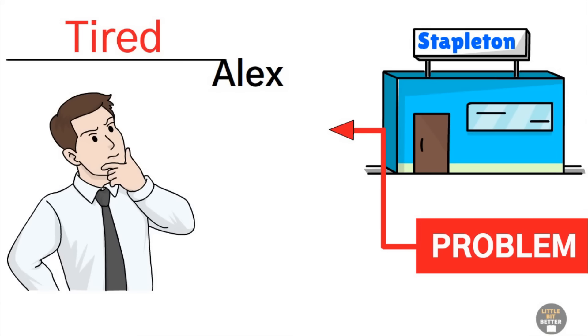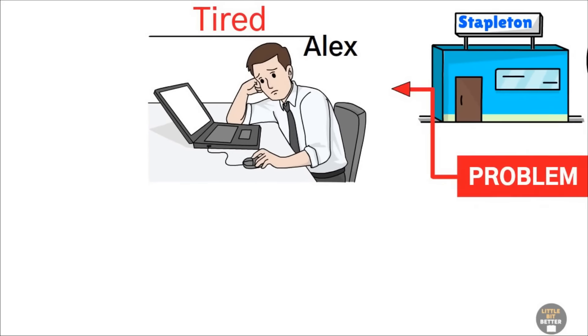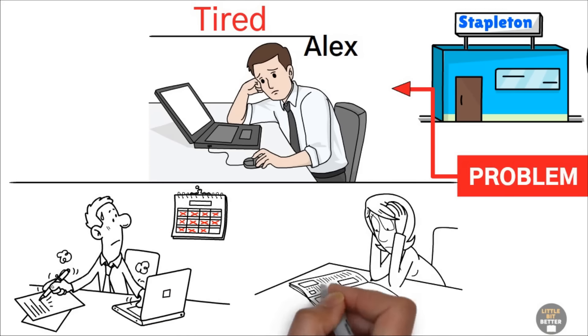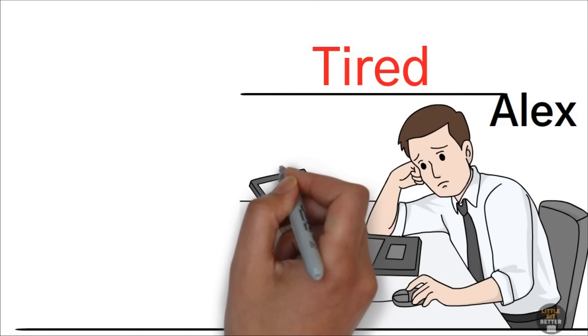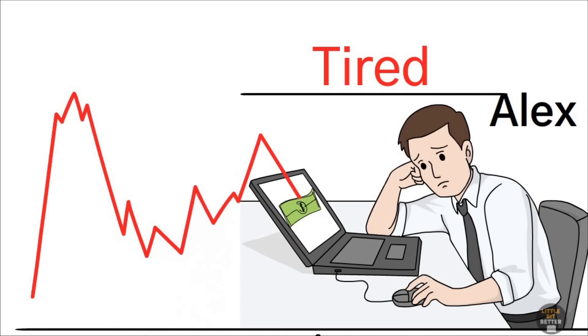Alex is tired. He's always running from one problem to the next. His employees, they're below average. They're not good at what they do. And then there's the money. One month, he's making good money, and the next, he's struggling to pay the bills.